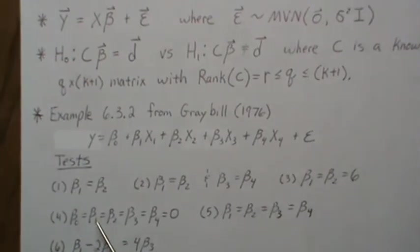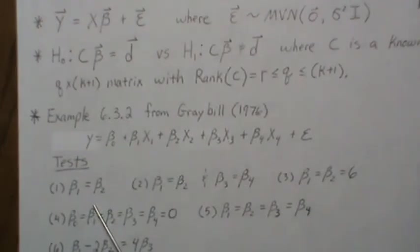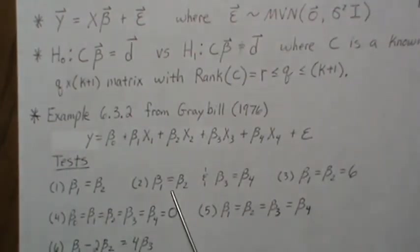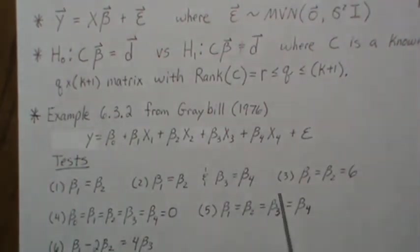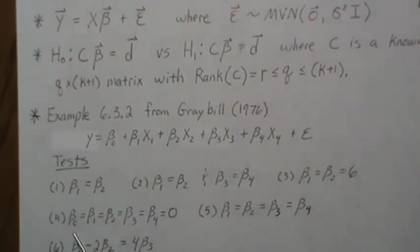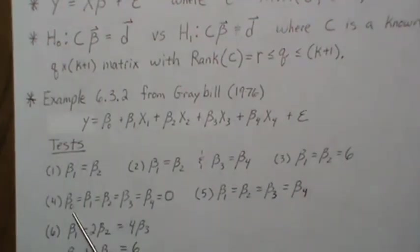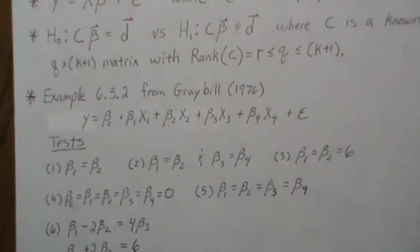In Test 1 we want to know: are beta_1 and beta_2 equal? In Test 2, are beta_1 and beta_2 equal, and are beta_3 and beta_4 equal? In Test 3, not only are beta_1 and beta_2 equal, but do they equal 6? In Test 4, are all the beta parameters equal to zero?